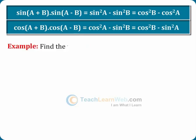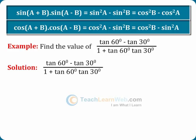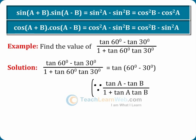Find the value of (tan60° minus tan30°) divided by (1 plus tan60°·tan30°), which equals tan(60° minus 30°) equals tan30°, which equals 1 divided by root 3.